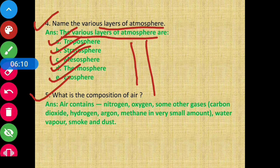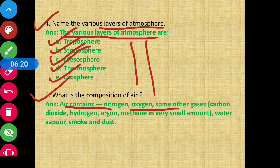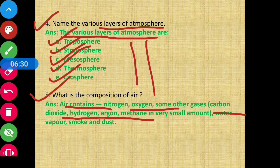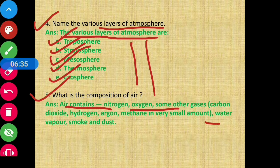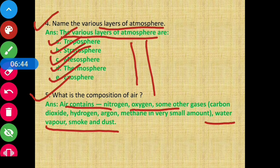Question number 5 — what is the composition of air? Air contains nitrogen, oxygen, and some other gases. The other gases present in small amounts include carbon dioxide, hydrogen, argon, and methane. Air also contains water vapor, smoke, and dust. These are the components that make up the composition of air.